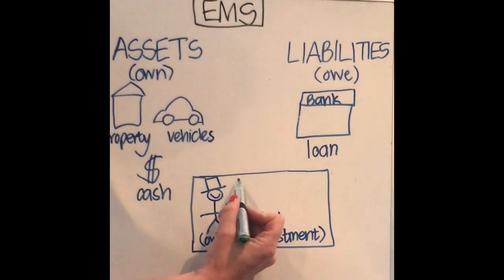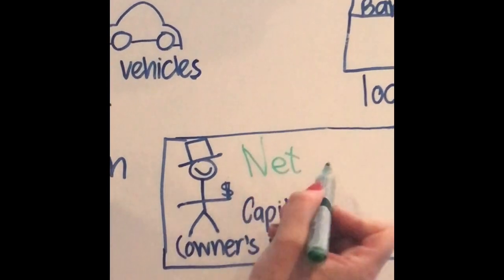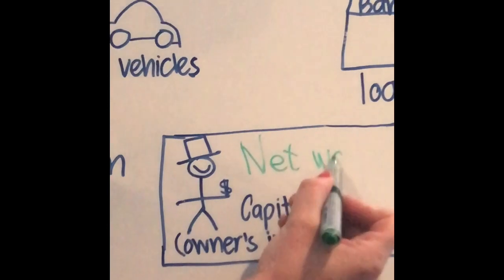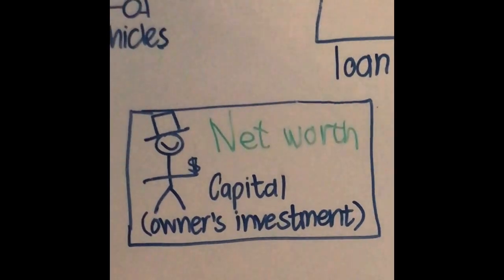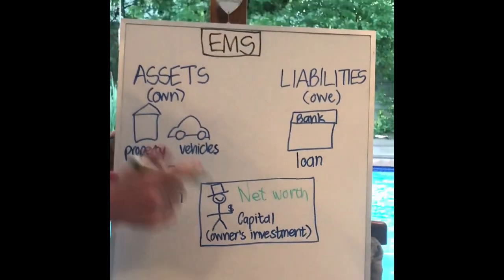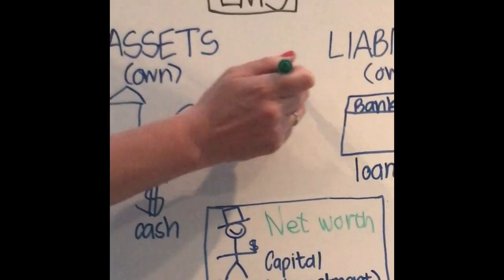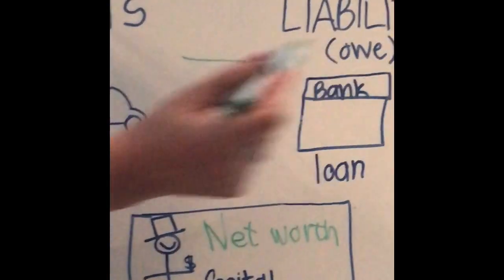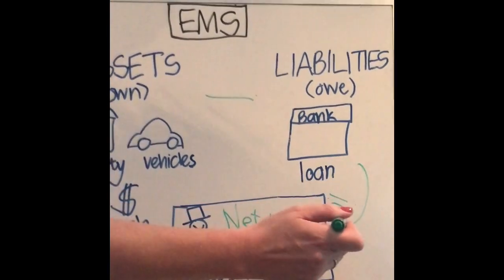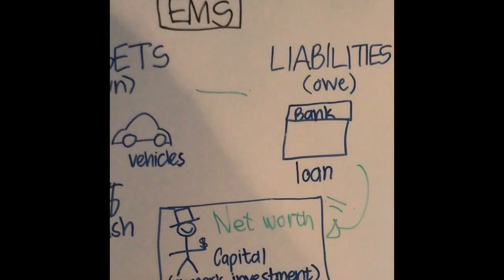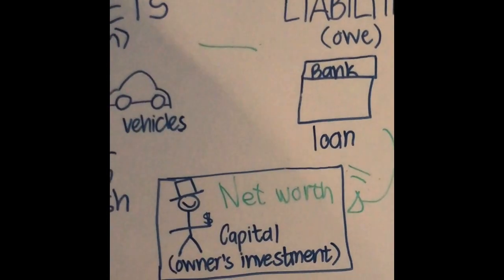In other words, we want to work out his net worth. All you have to do is take all of the assets added together, minus all the liabilities, and that will equal the net worth of the owner and of the business.